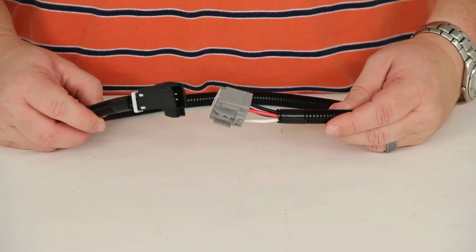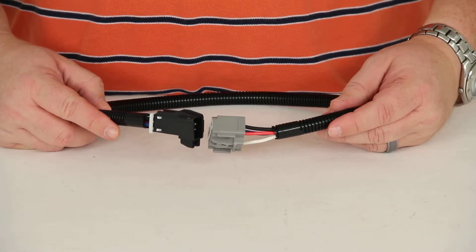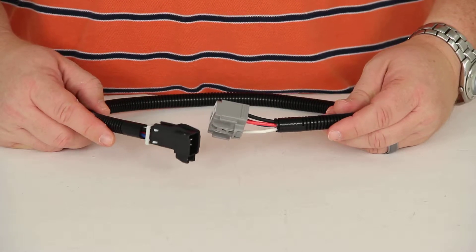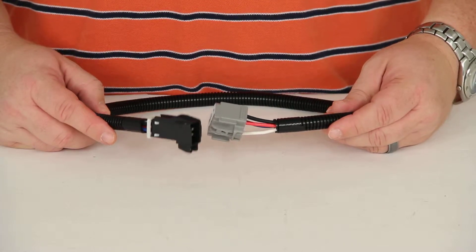Today we're going to take a look at the Curt Custom Wiring Adapter for trailer brake controllers with dual plug-in, number C51422.